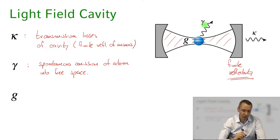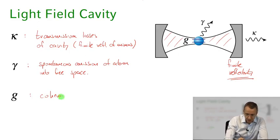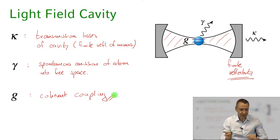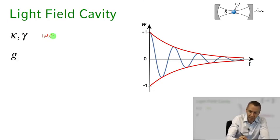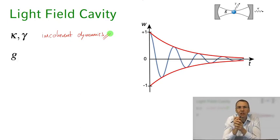We have the coherent coupling that describes the coupling of our two-level atom with the single mode radiation field, competing with two incoherent processes: photon loss out of the cavity, and atomic excitation radiated into free space such that it cannot interact with the atom anymore.